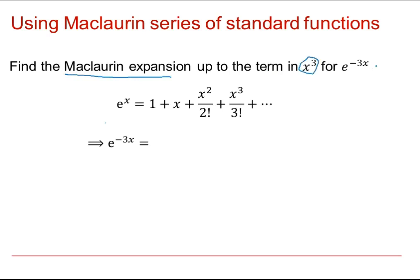So we have our standard expansion of e to the x. To create this new expansion, I just need to substitute x with minus 3x, and if you bracket the minus 3x as you're going along, it may avoid potential sign errors.